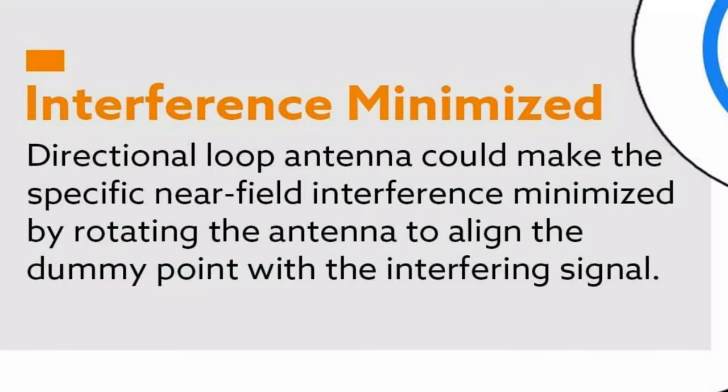The directional loop antenna can minimize specific near-field interference by rotating the antenna to align the dummy point with the interfering signal.